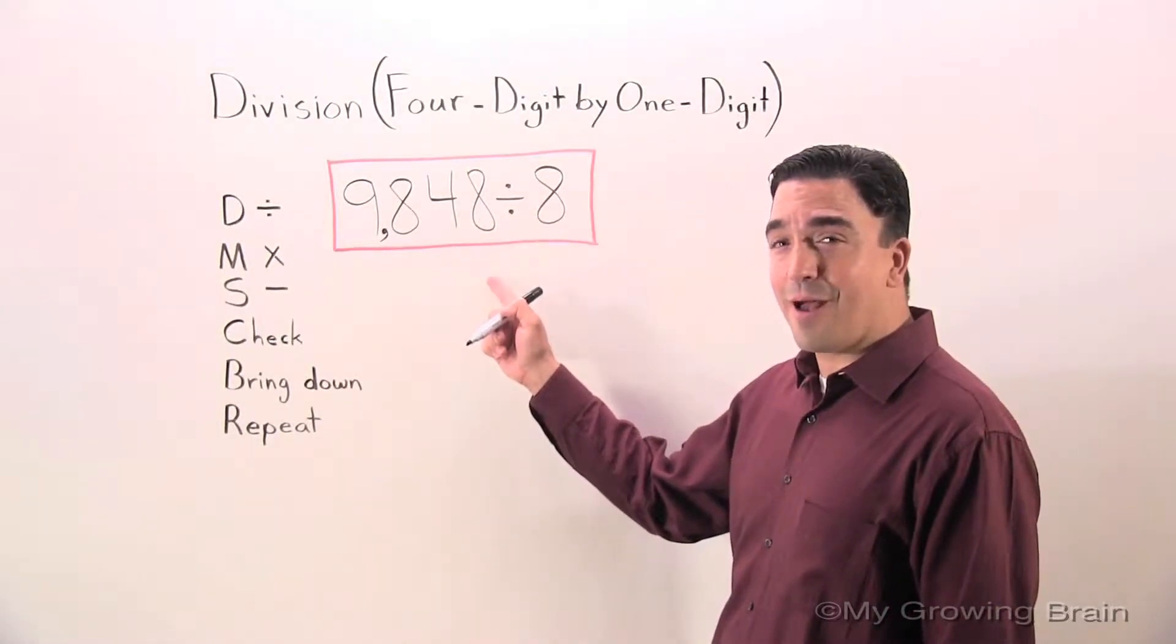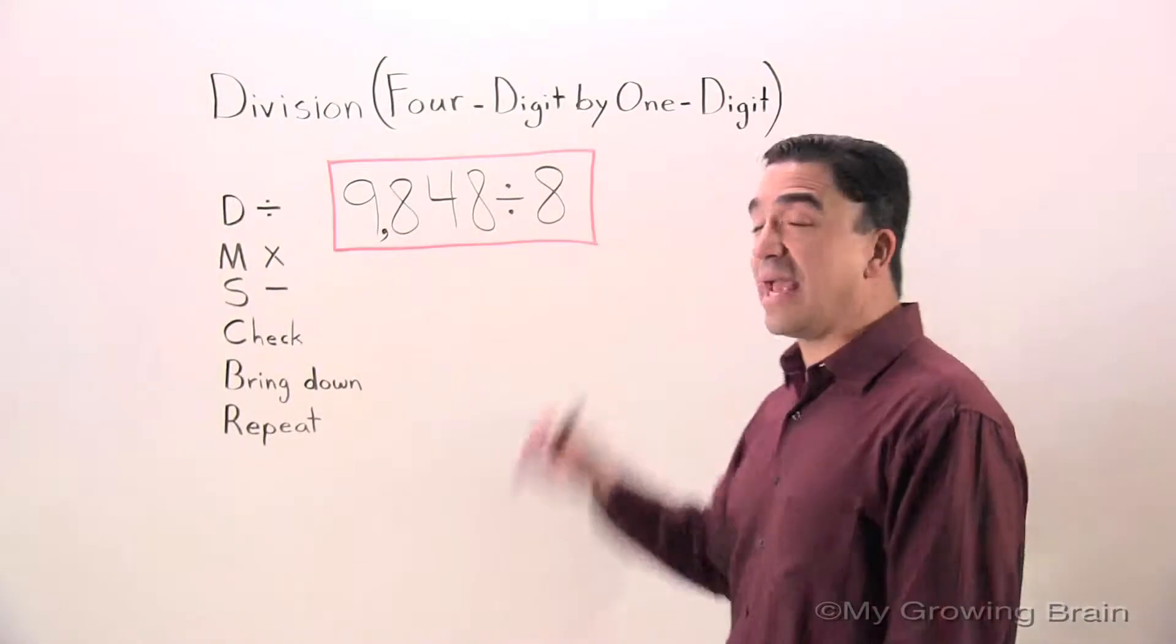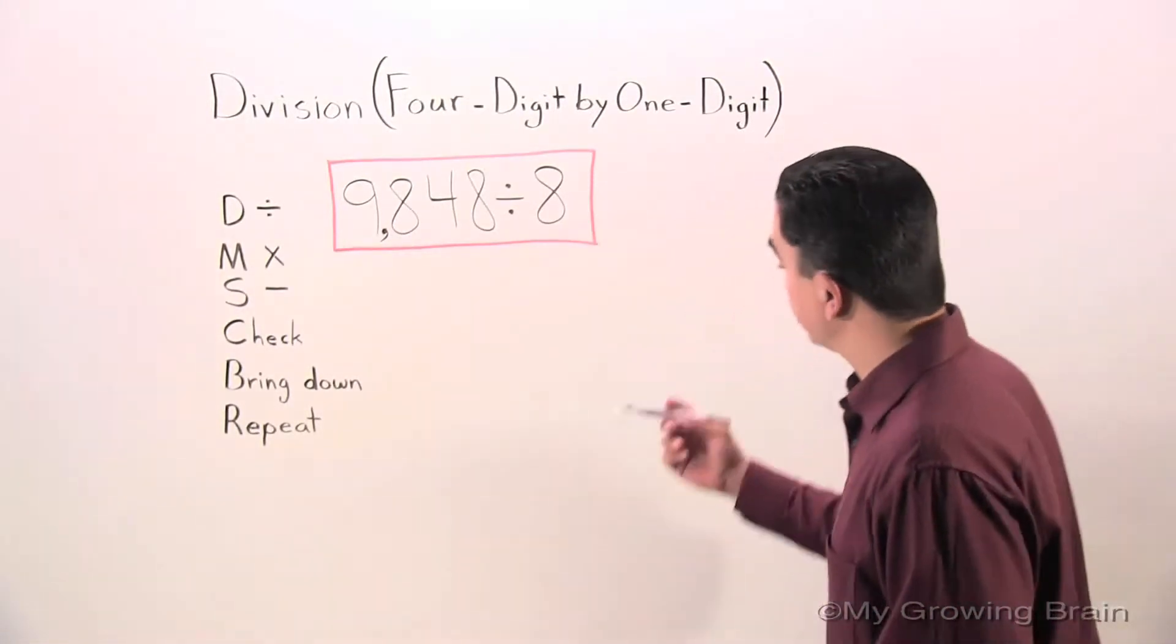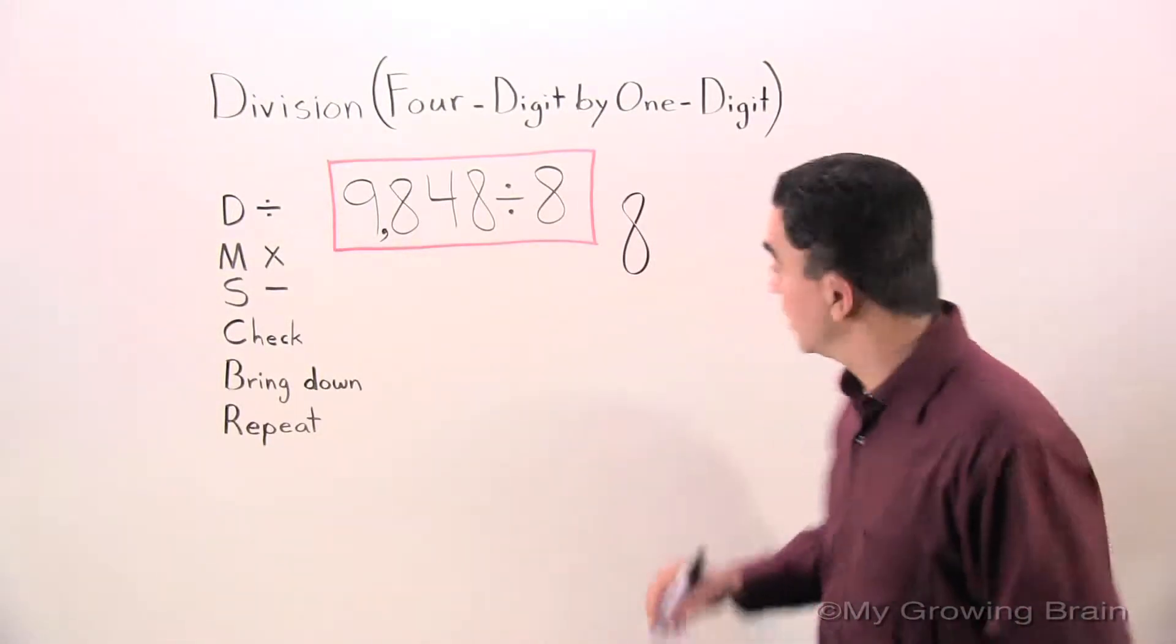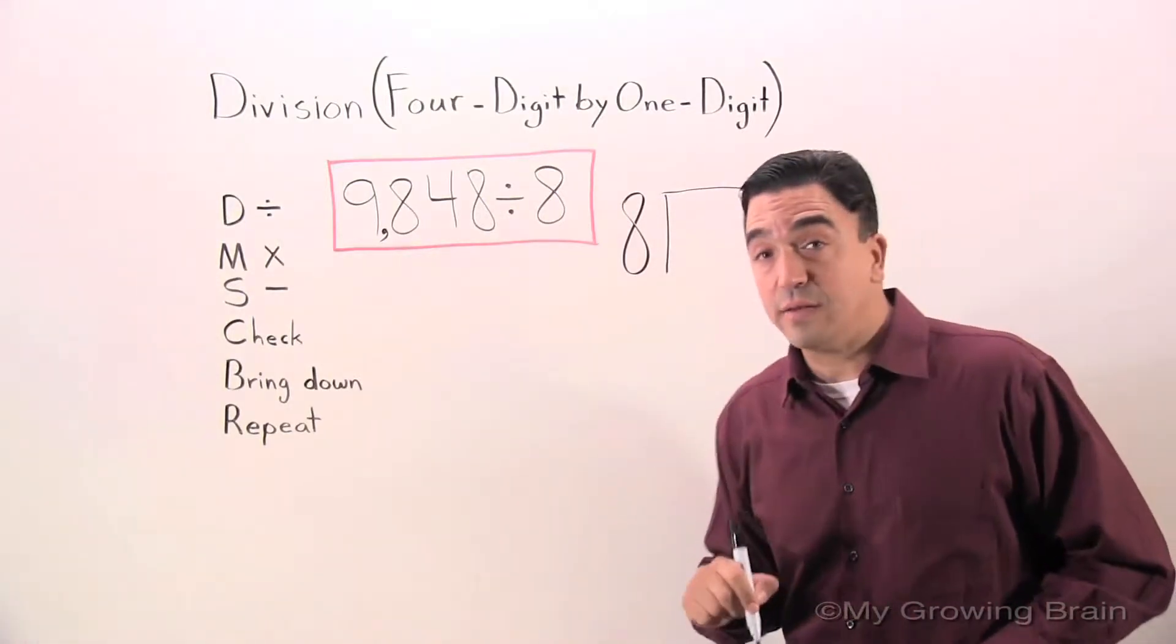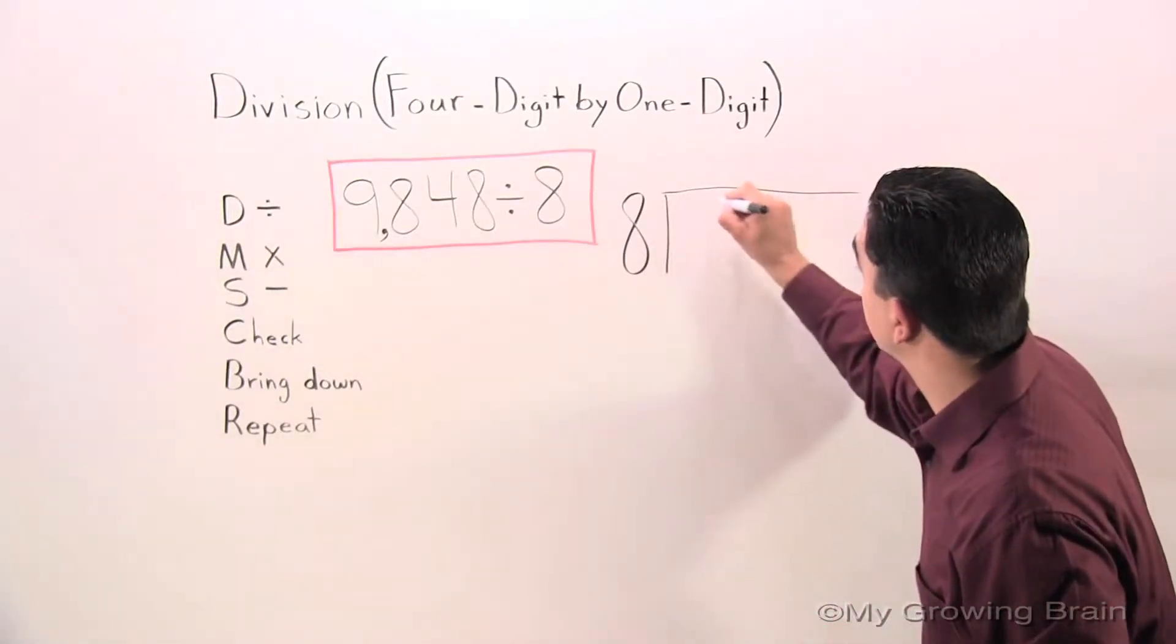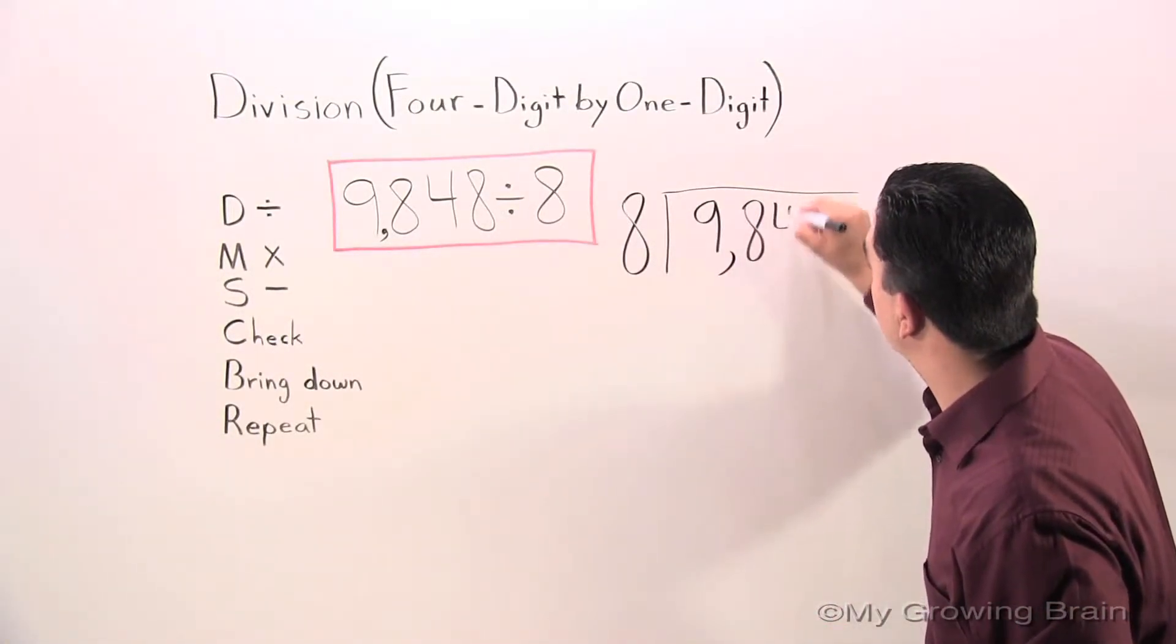I wrote a problem on the board, 9,848 divided by 8, but we need to make a more workable format. I'm going to write the divisor 8 right there, and I'm going to make a bracket, and inside the bracket I'm going to put the dividend, 9,848.